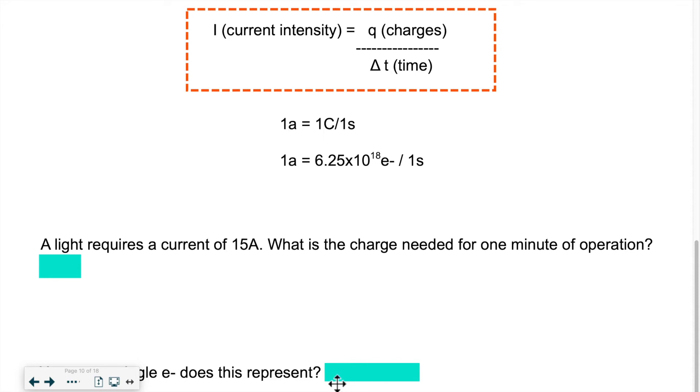What could a problem look like? This is the first example. A light requires a current of 15A. What is the charge needed for one minute of operation?